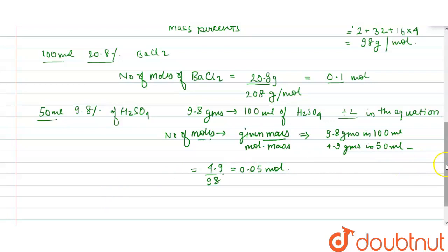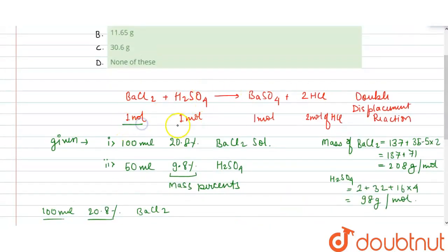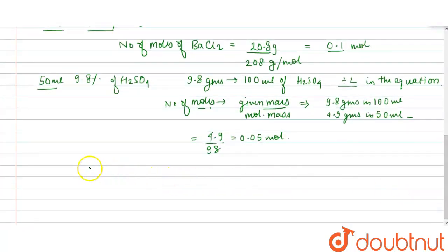Hence, now if we see in the reaction given, it is 1 mol of barium chloride plus 1 mol of H2SO4 gives the product as 1 mol of barium sulfate. Here, we have 0.10 mol of barium chloride and 0.05 mol of H2SO4. Hence, H2SO4 becomes the limiting reagent as it is present in less quantity, as the ratio was required as 1 to 1.